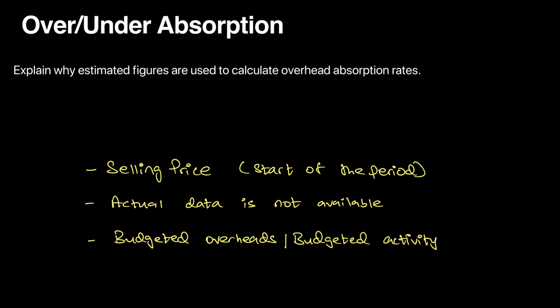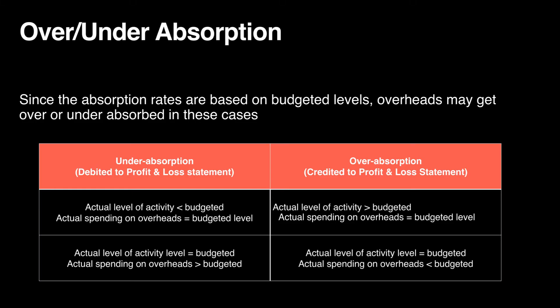Since firms use budgeted data, when the period ends and actual data becomes available, firms can compare their budgeted data with actual data. This comparison results in over and under absorption of overheads.